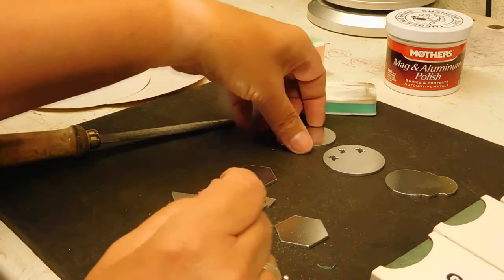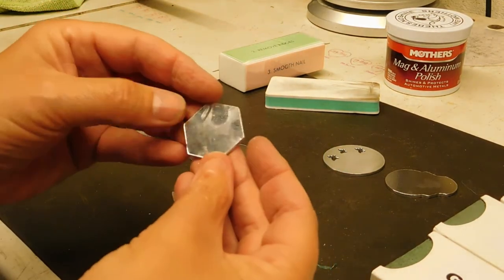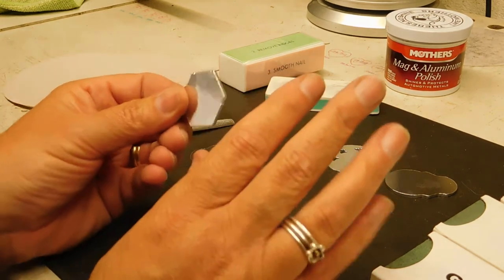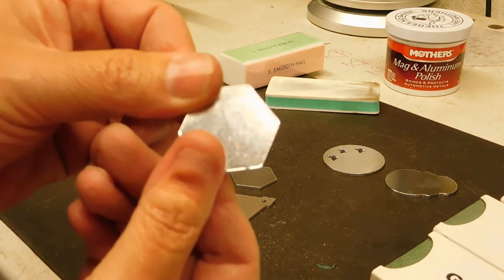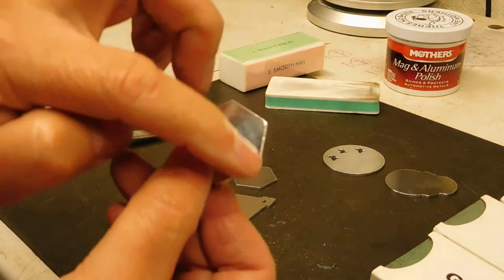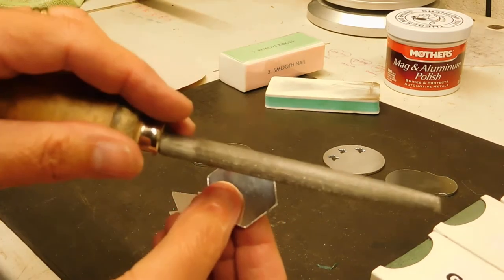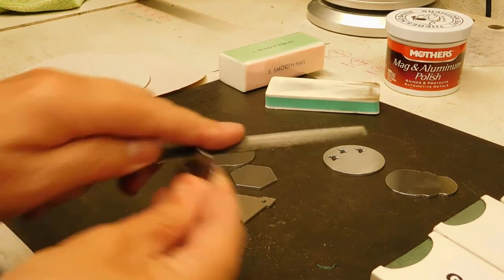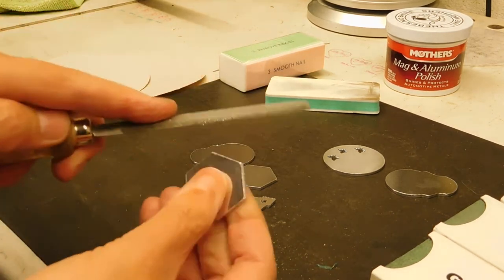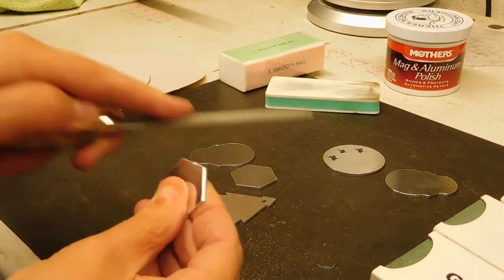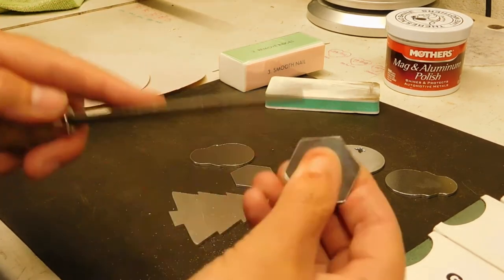Sometimes when you get laser-cut blanks, the laser cuts properly but can leave you with a slight raised bit. You can get rid of that really simply with your file. I always file away from myself, go all the way around, and then run it across the top like that.